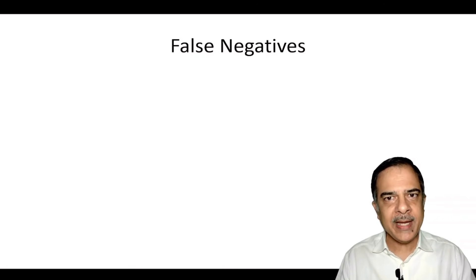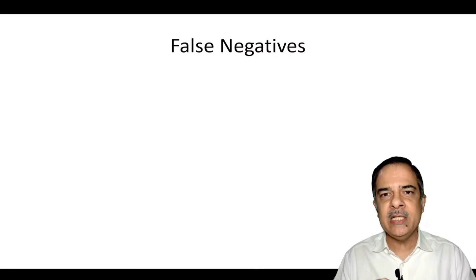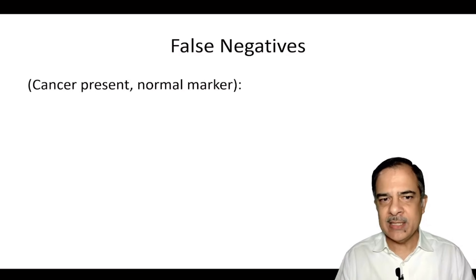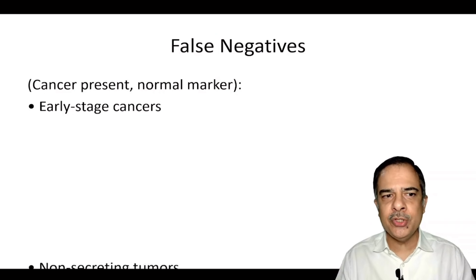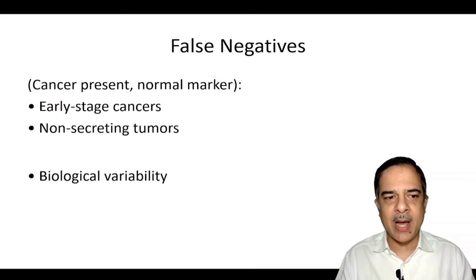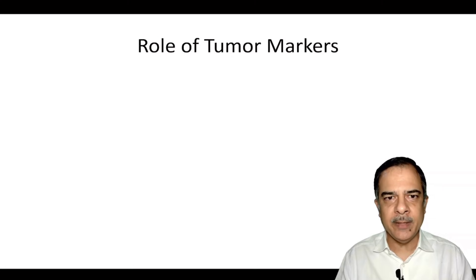These markers can also be falsely negative. False negative means there is cancer in the body but the markers are negative or normal in the blood — cancer present with a normal marker. The reasons could be early stages of cancer, tumours not secreting these markers, or biological variability.